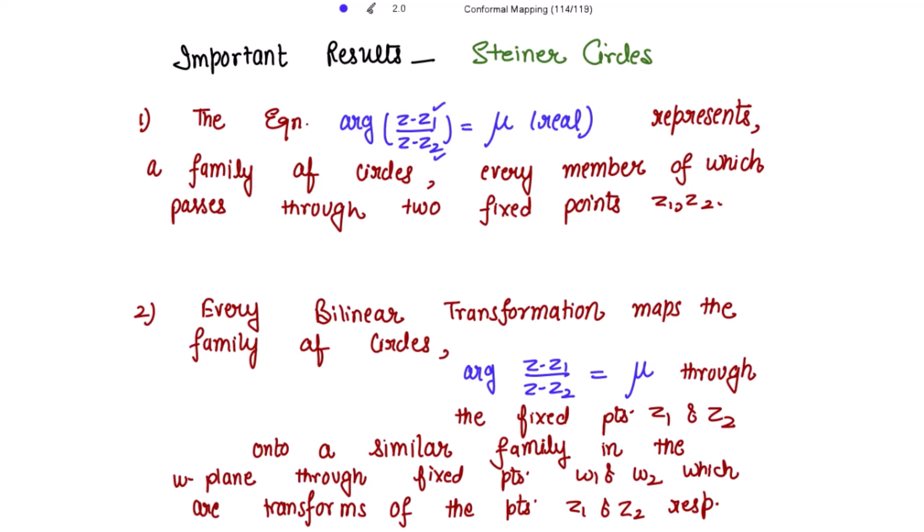The second Steiner circle of the second kind states that every bilinear transformation maps the family of circles arg((z − z1)/(z − z2)) = μ, passing through the fixed points z1 and z2, onto a similar family in the w-plane through fixed points w1 and w2, which are the transforms of z1 and z2 respectively. These are equation 1 and equation 2 — the Steiner circles of the first kind and the second kind.